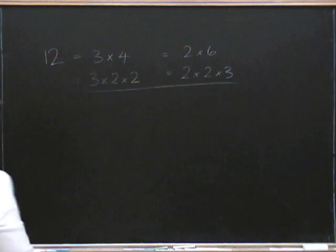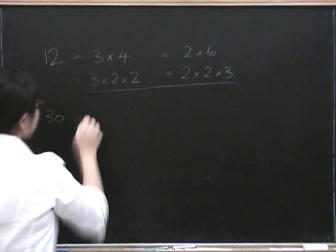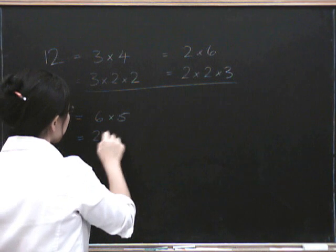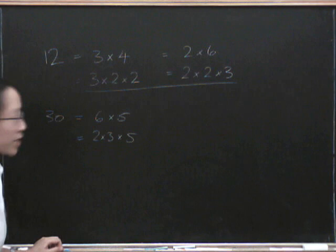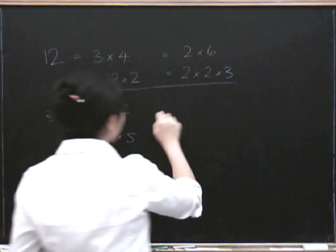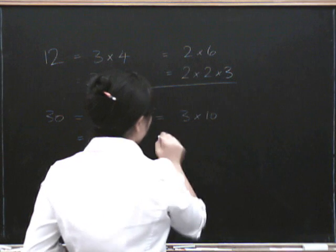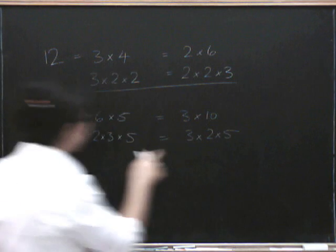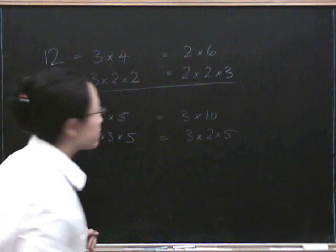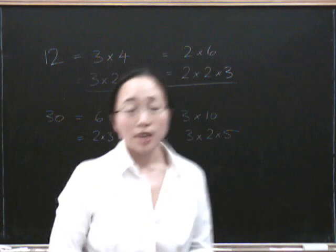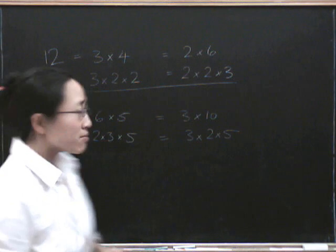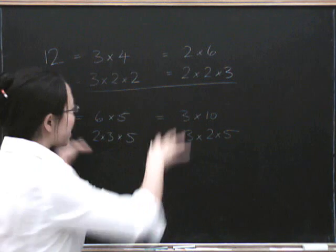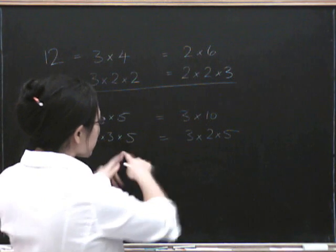Let's try this with a slightly more complicated number — let's try 30. We know that 30 is 6 times 5, and 6 is 2 times 3, so that's 2 times 3 times 5, and we can't get that any smaller. We could have started by saying 30 is 3 times 10, and 10 is 2 times 5, so that's 3 times 2 times 5 — the same numbers, just in a different order. You should try this yourself if you haven't done this before.